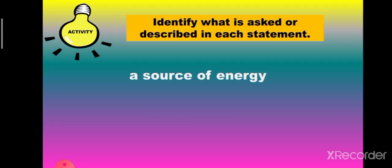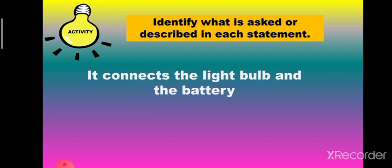Good job. This time, identify what is asked or described in each statement. A source of energy — it is the source, a dry cell, or a battery. It connects the light bulb and the battery — it's the wire or the path.